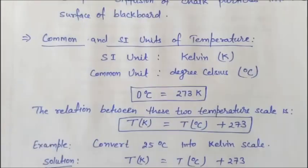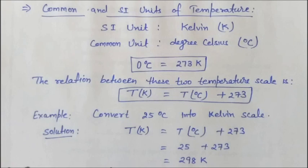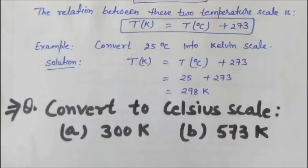Now we will solve one example. Convert 25°C into the kelvin scale. We write the formula: T(K) = t(°C) + 273. We place the value of temperature in degree Celsius: T(K) = 25 + 273 = 298 K. Based on this formula, you have to solve two problems: convert 300 K and 573 K into degree Celsius.